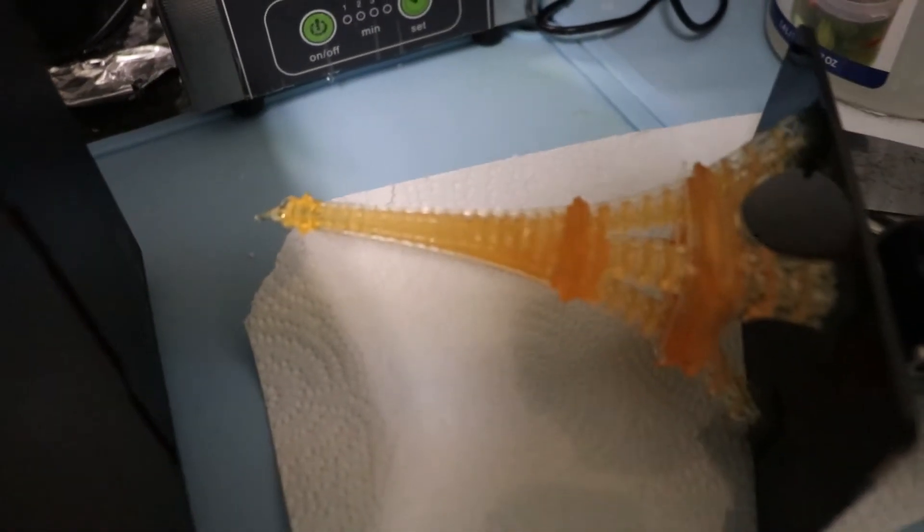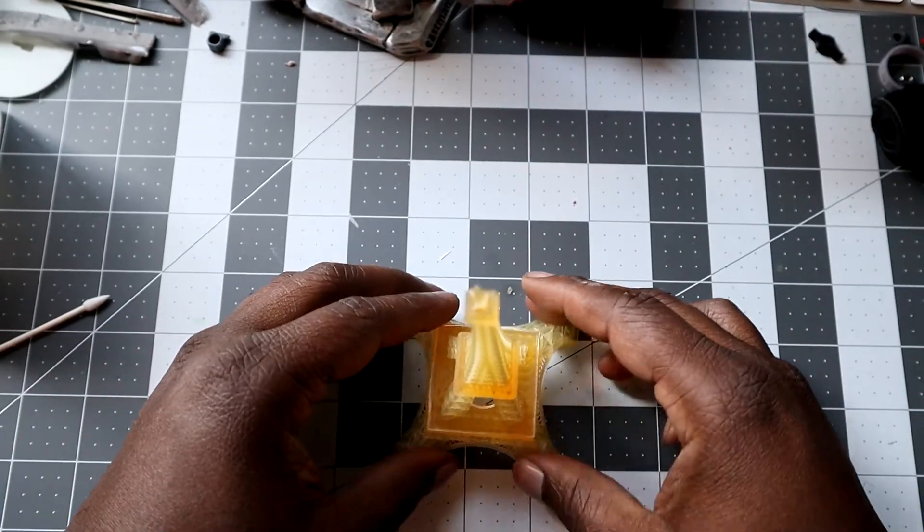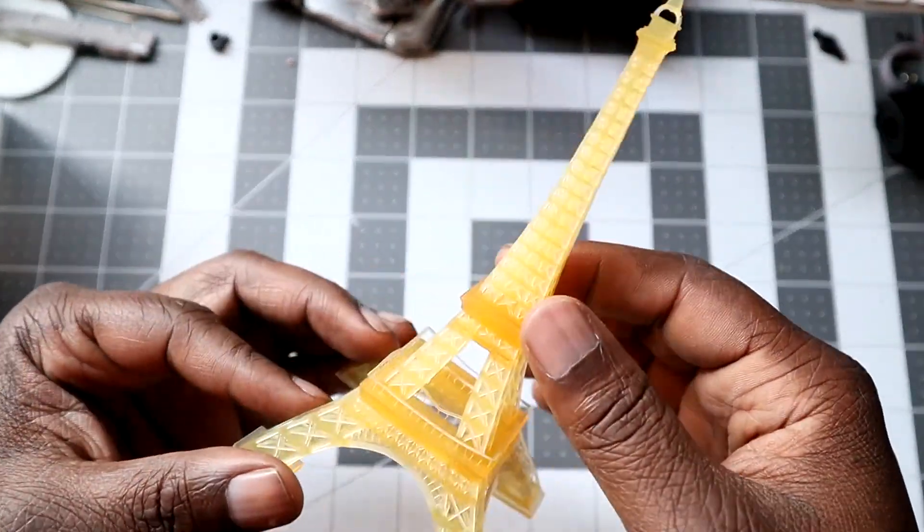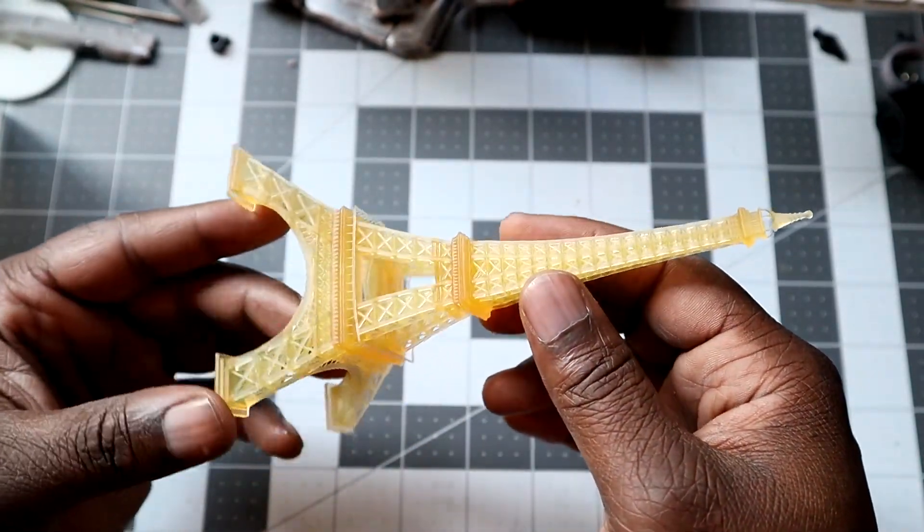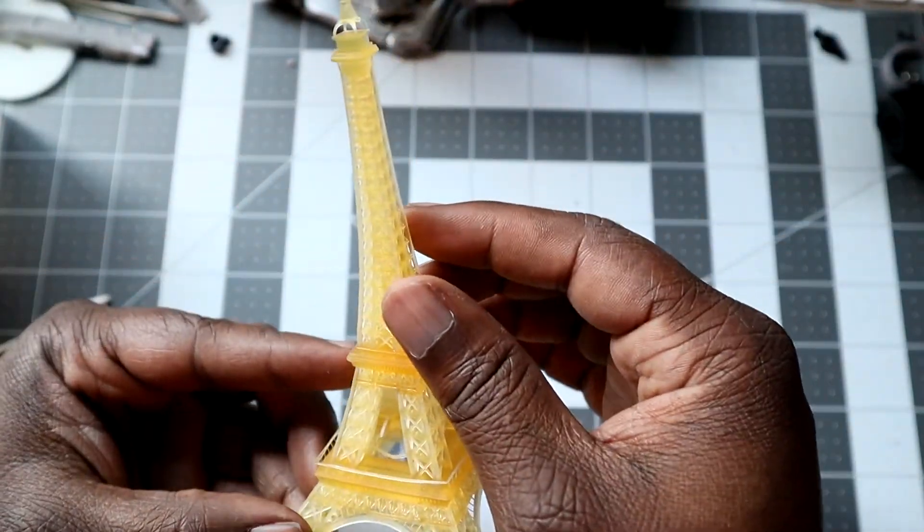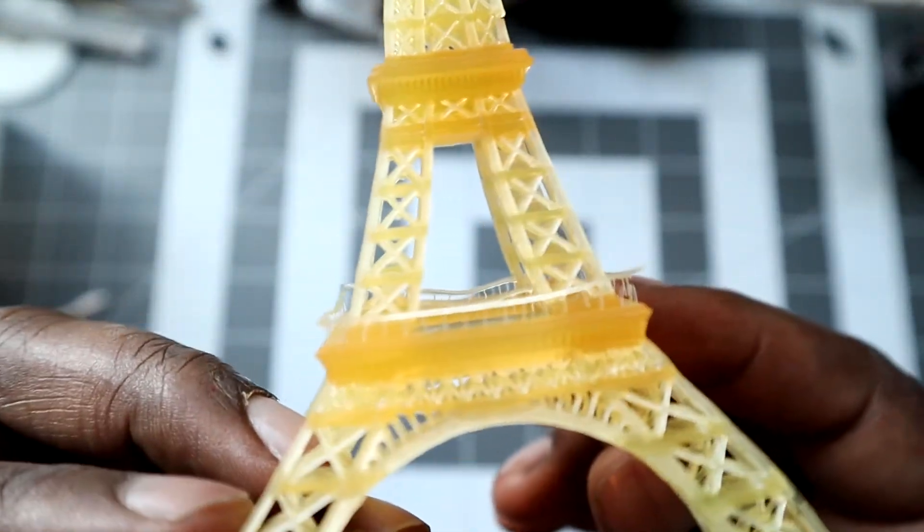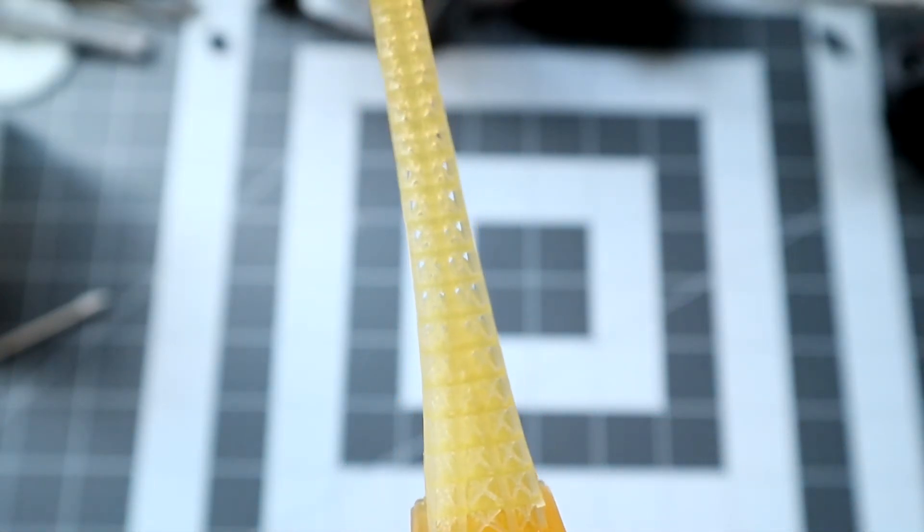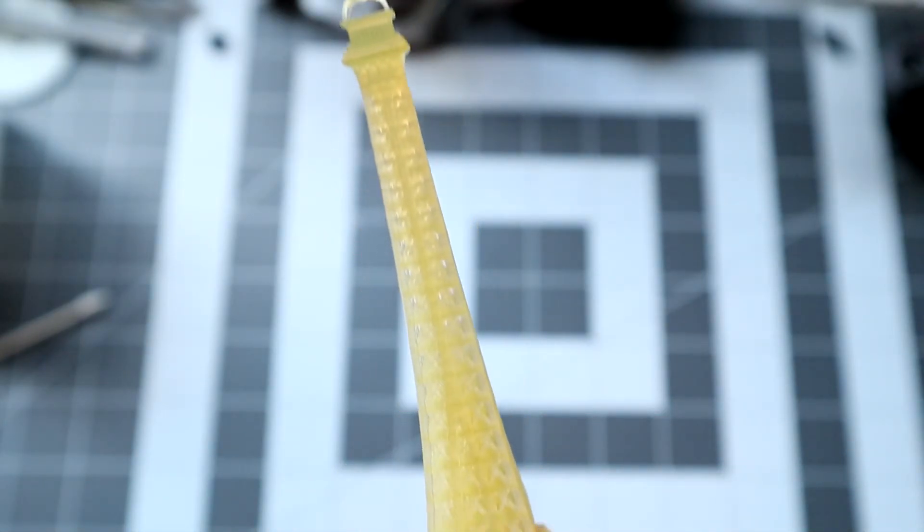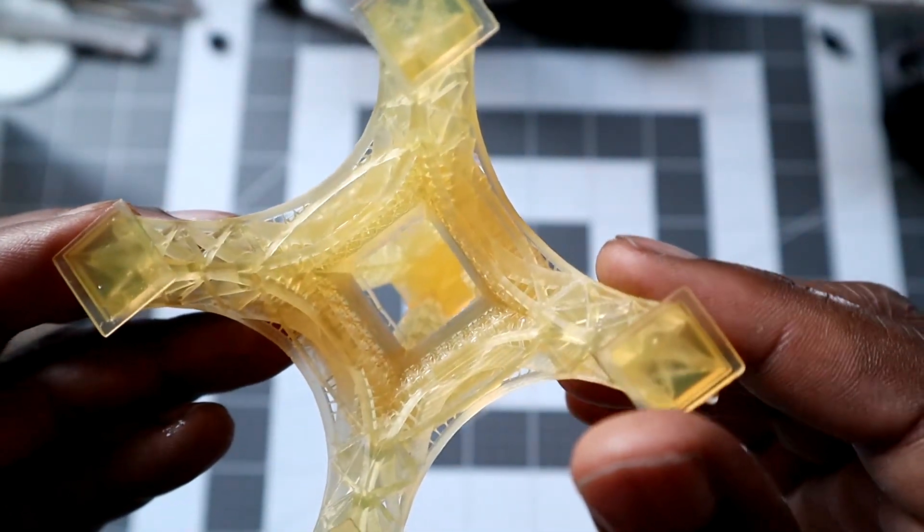I also went ahead and printed out an Eiffel Tower model, the classic 3D printer resin printer test print. I've never printed one of these before on my Mars, so I figured why not since I already had the resin mixed. I think it came out great. You can see some damage that the model took when I was washing it, but the fine details are pretty impressive. I'm really impressed with this little 3D printer.